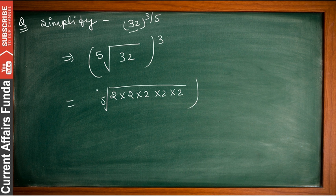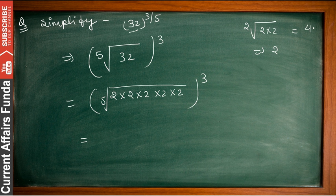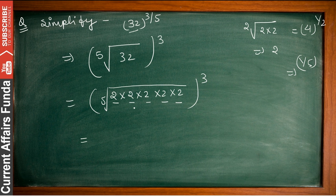Taking the 5th root of 2 to the power 5 gives us 2. We need 5 twos here: 1, 2, 3, 4, 5. So the 5th root gives us 2, and with the power of 3, we get 2 to the power 3, which is 8. So 8 is your answer for 32 to the power 3 by 5.